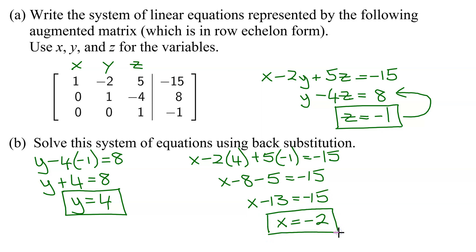So I've now solved my system, but we often write the answer as an ordered triple. x comes first, negative 2, then y is 4, and finally z equals negative 1.